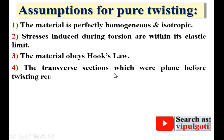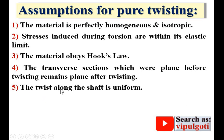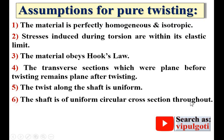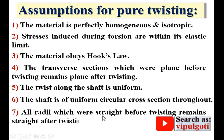Fourth, the transverse sections which were plane before twisting remain plane after twisting — that means the dimensions of the transverse section remain constant before and after twisting. Fifth, the twist along the shaft is uniform. Sixth, the shaft is of uniform circular cross-section throughout. Seventh, radii which were straight before twisting remain straight after twisting — that means after application of the twisting moment, the radius remains a straight line and does not deform into a curve.